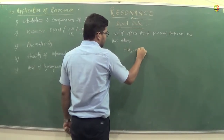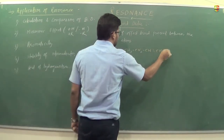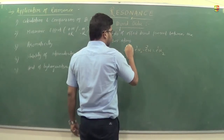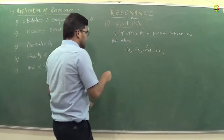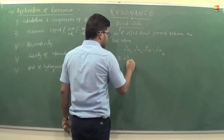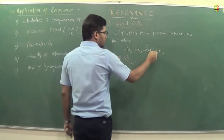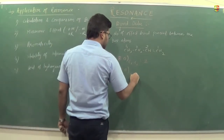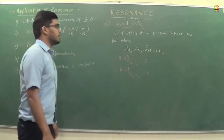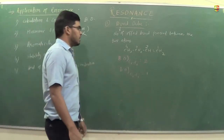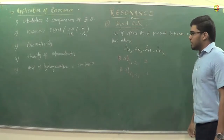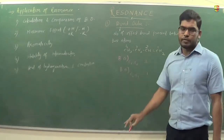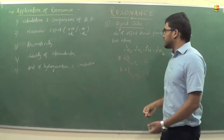For example, in the molecule CH₃–CH₂–CH₂–CH=CH₂, the bond order of C1–C2 is 2, C2–C3 is 1, and C3–C4 is 1. We simply count the number of bonds between the two carbon atoms. But in case of resonance, since delocalization of electrons takes place, we cannot give such a direct answer.